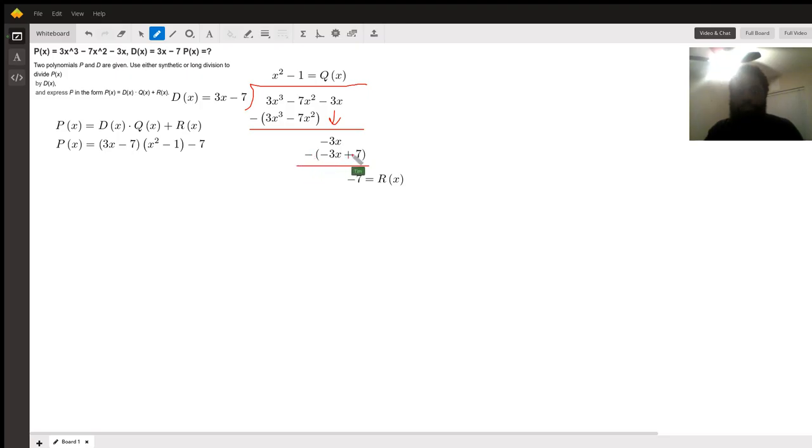Then we subtract to cancel out the 3x's and the positive 7 becomes negative, giving us a remainder of negative 7 and the quotient of x squared minus 1.